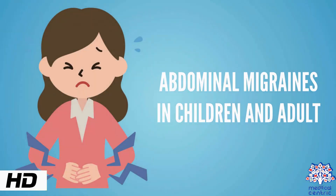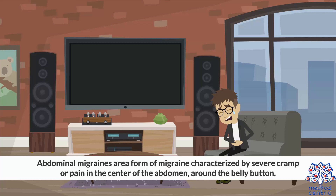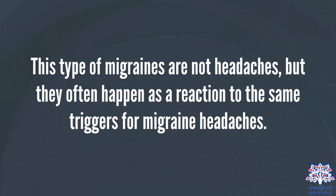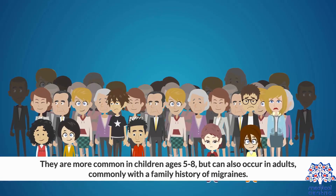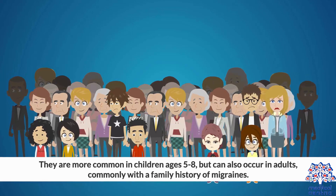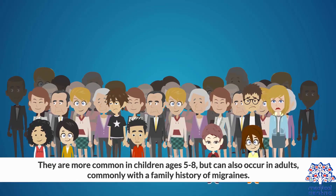Today's topic is abdominal migraines in children and adults. Abdominal migraines are a form of migraine characterized by severe cramp or pain in the center of the abdomen, around the belly button. These types of migraines are not headaches, but they often happen as a reaction to the same triggers for migraine headaches. They are more common in children ages 5 to 8, but can also occur in adults, commonly with a family history of migraines.